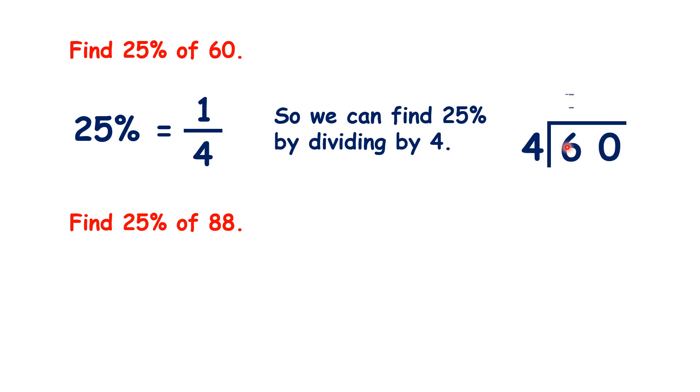Now let's think about how to find percentages of numbers. So here we need to find 25% of 60. Well, we already know how to find fractions of numbers. So if we know that 25% is one quarter, we can find 25% by dividing by 4. So we have 15.